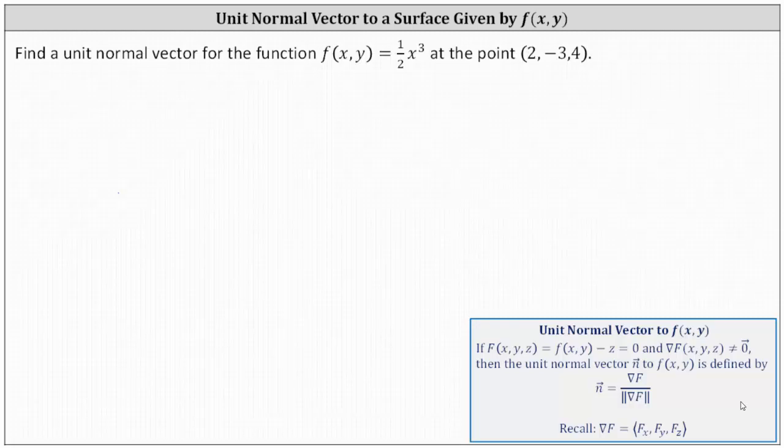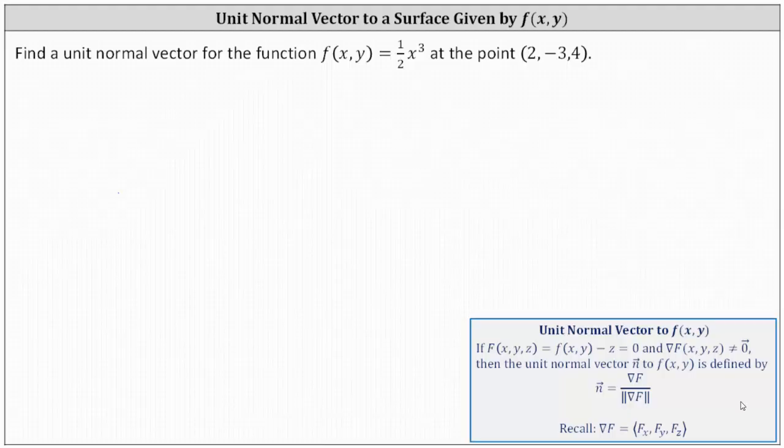Find the unit normal vector for the function f(x, y) = ½x³ at the point (2, -3, 4).